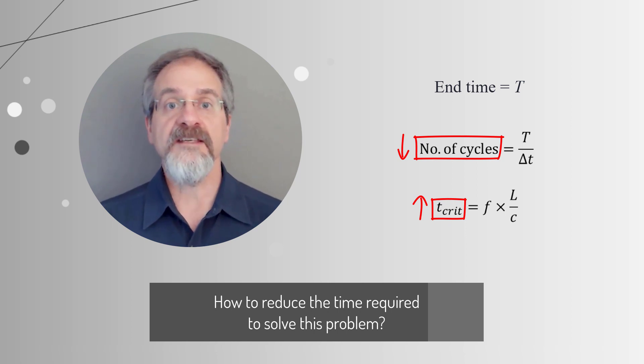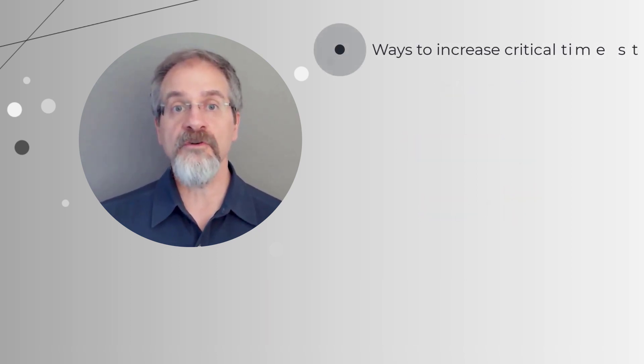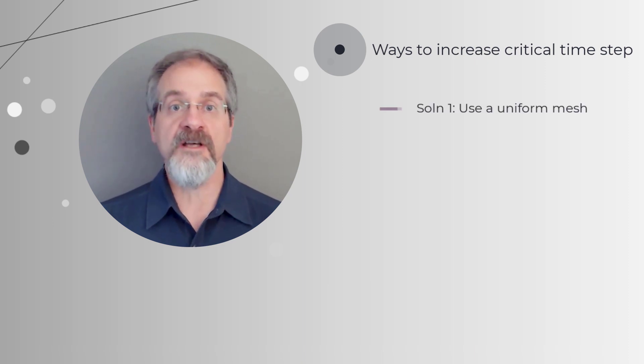One way to do that is to increase the characteristic length, which is determined by the smallest element in the entire mesh. Hence, in explicit dynamics, it is important to use as uniform a mesh as possible.